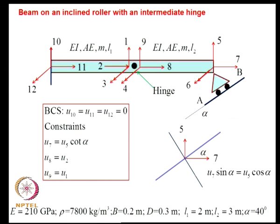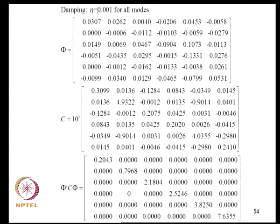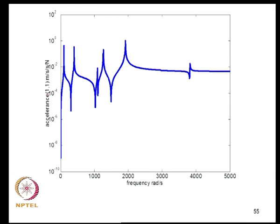Let us quickly work out the FRF for a specific multi-degree-of-freedom system studied previously — a 6-DOF system with its given mass and stiffness matrices. Assuming all modes have damping ratio 0.001 (very lightly damped), we construct a classical C matrix and verify that Phi-transpose·C·Phi is diagonal. The accelerance H_{1,1} — applying harmonic load at DOF 1 and measuring acceleration there — shows 6 peaks across the frequency range corresponding to the 6 natural frequencies of the system, along with characteristic dips between peaks.